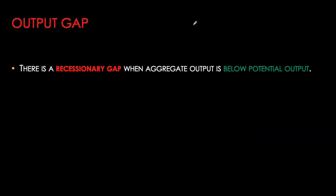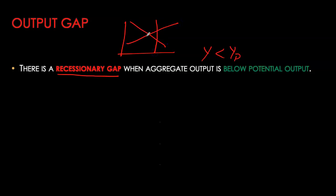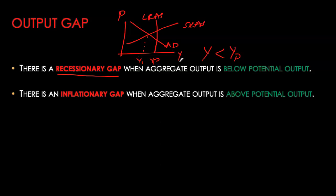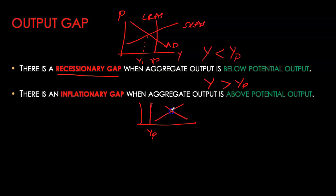Let's now draw our output gaps with all three curves on the diagram. My short-run equilibrium output needs to be below my potential if I want to show a recessionary output gap. On the diagram, the intersection of short-run AS and AD needs to be to the left of my long-run AS, depicting this recessionary output gap. Similarly, for an inflationary output gap, my current short-run equilibrium GDP must be higher than our potential GDP, so the long-run aggregate supply curve must be to the left of my short-run equilibrium GDP.